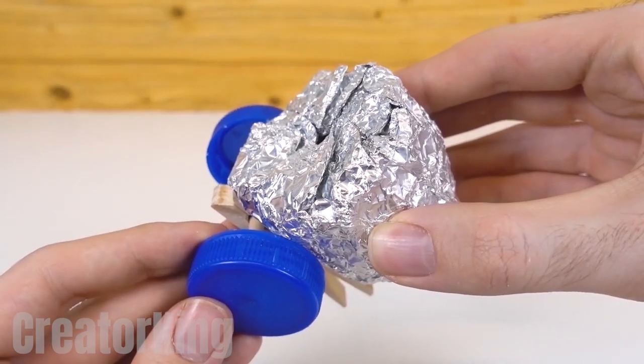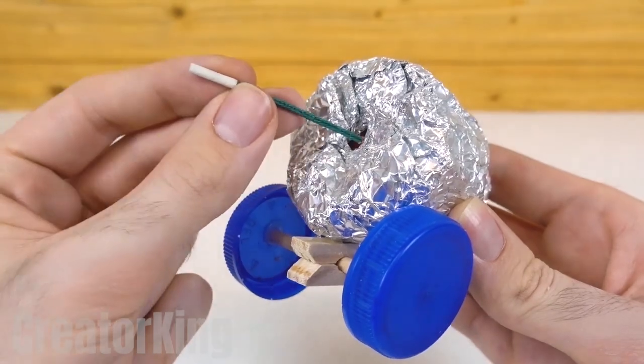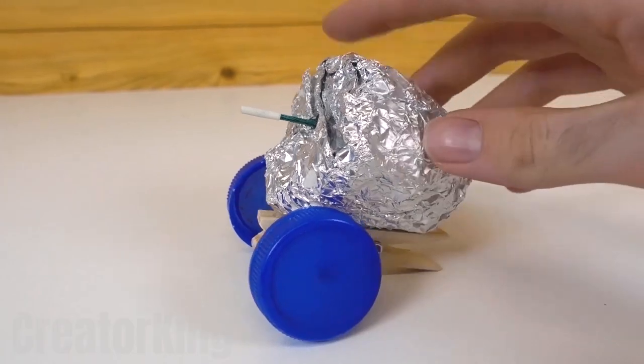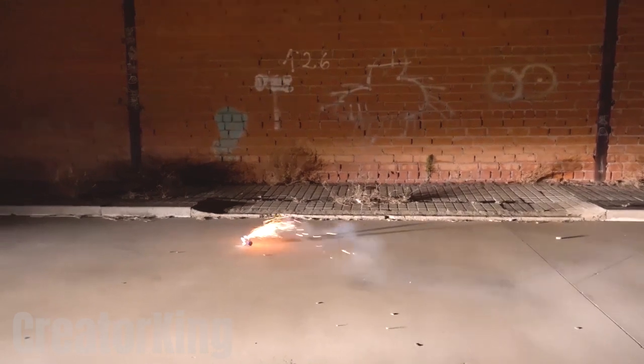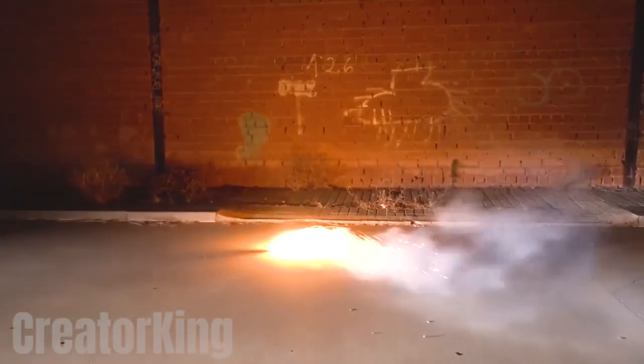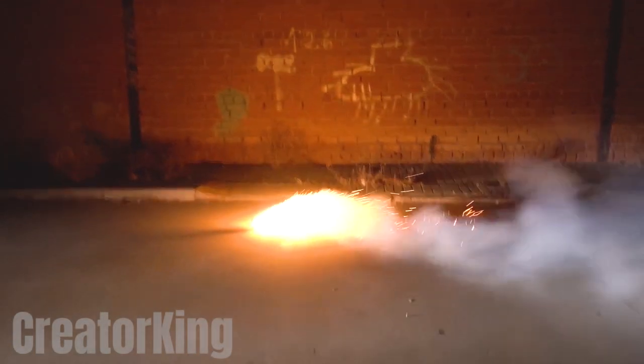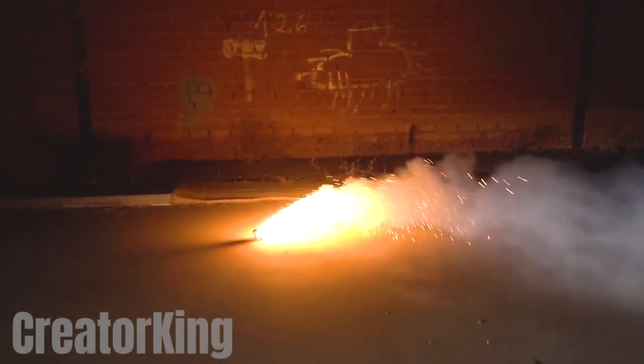The final step is putting the wick into the opening of the container. Our firework launcher is ready. To activate it, just light the fuse and run for your life. The magic will happen on its own. Look how beautiful it looks. What a sight to see!